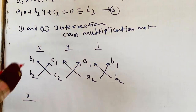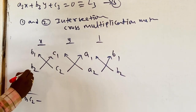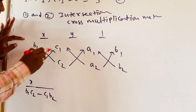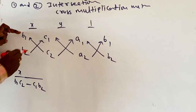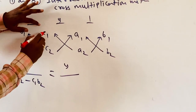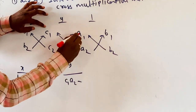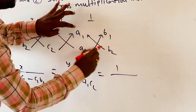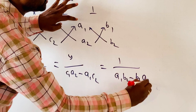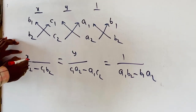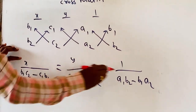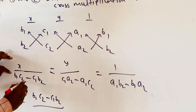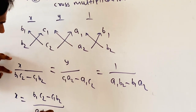From the cross multiplication, X / (B1·C2 − C1·B2) = Y / (C1·A2 − A1·C2) = 1 / (A1·B2 − B1·A2). By comparing the first and third terms, X = (B1·C2 − C1·B2) / (A1·B2 − B1·A2). By comparing the second and third terms, Y = (C1·A2 − A1·C2) / (A1·B2 − B1·A2). These are the X and Y values for the intersection of L1 and L2.